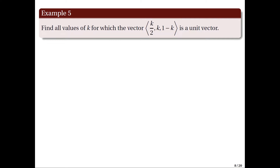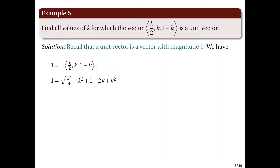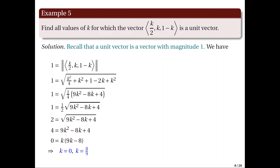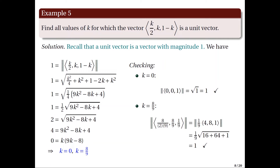Moving on to the fifth example, we find the values of K for which the given vector is a unit vector. Recall that a unit vector is a vector with magnitude 1. Manipulating the magnitude equation, we obtain solutions K = 0 and K = 8/9. Substituting K = 0 gives the unit vector (0, 0, 1), and substituting K = 8/9 also yields a vector of magnitude 1. Hence, both K = 0 and K = 8/9 are valid solutions.